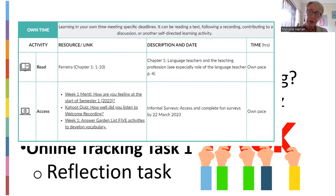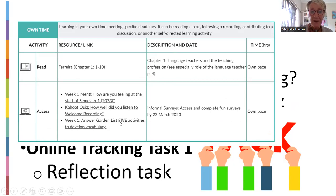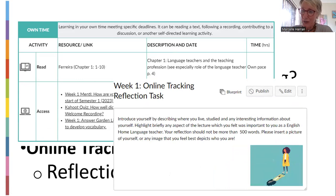If you go to your Canvas Quick Links for Week 1, you can see the Mentimeter task — just click the link and you'll go through to Mentimeter. Here's your Kahoot quiz link. You can do it more than once. And here's your answer garden — there are five activities to develop your vocab, this is for SPs. And there's your online tracking reflection task, where you're going to introduce yourself and tell me something about you in 500 words. I'm asking you to put an image of yourself, or a picture of anything that represents you.